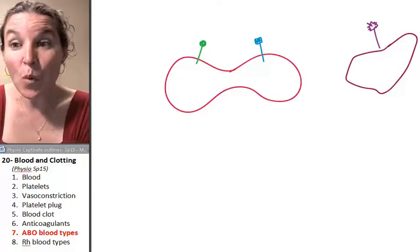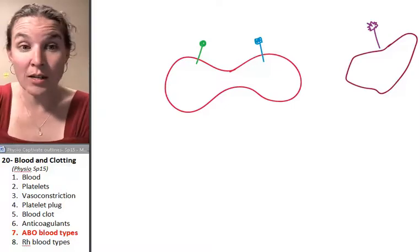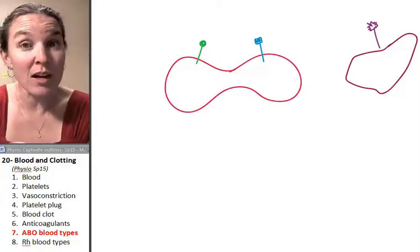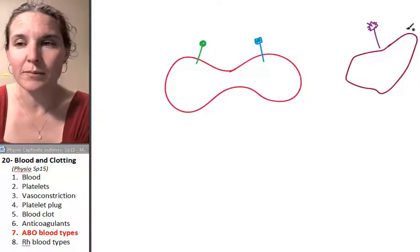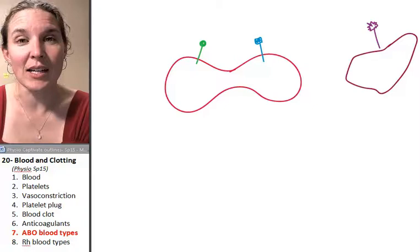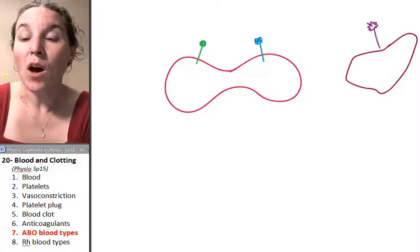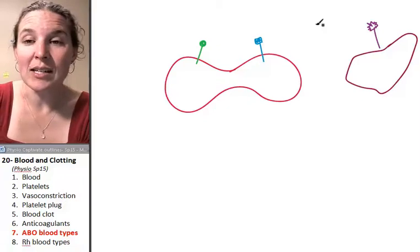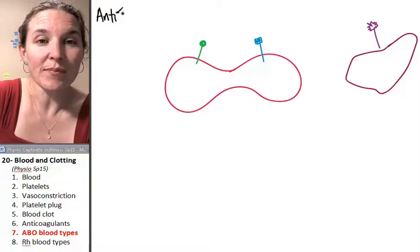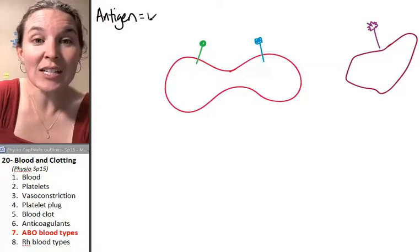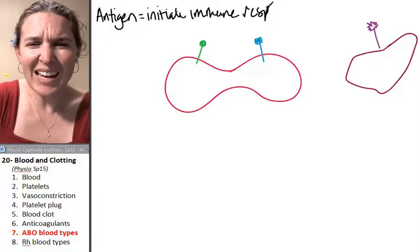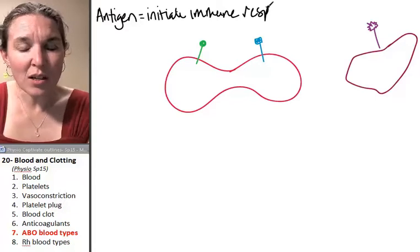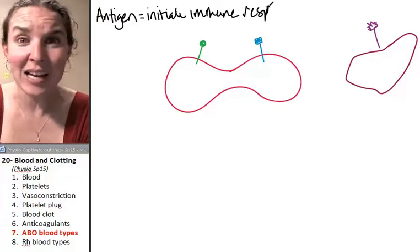These things, whether they're in you or they're on something else, a bacteria, a virus, a piece of pollen, a grain of pollen. I was about to say a grain of sand, but I'm pretty sure a grain of sand doesn't initiate an immune response. Anything that initiates an immune response is called an antigen. And again, why would we have an immune response? Dude, the thing we're responding to isn't us. Kill it. Get rid of it.